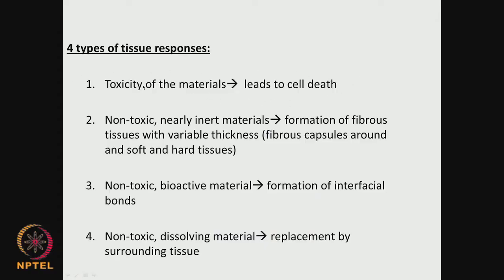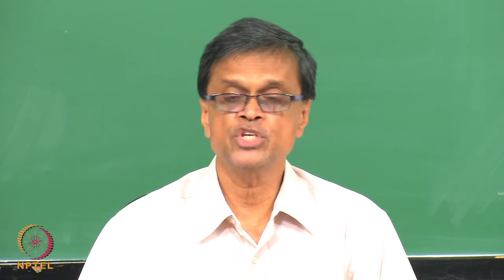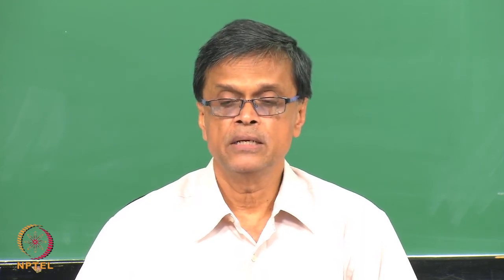We can look at different cells related to the human system and find out the toxicity of the material. For non-toxic, nearly inert materials — for example, PTFE — if you look at biomaterial history, the second generation felt that we should have inert materials as biomaterials. PTFE and PVC are extremely inert.